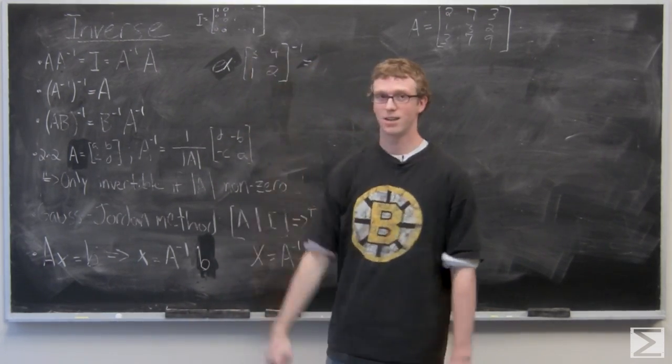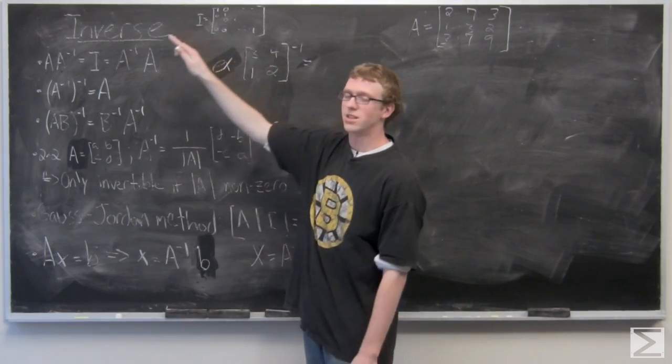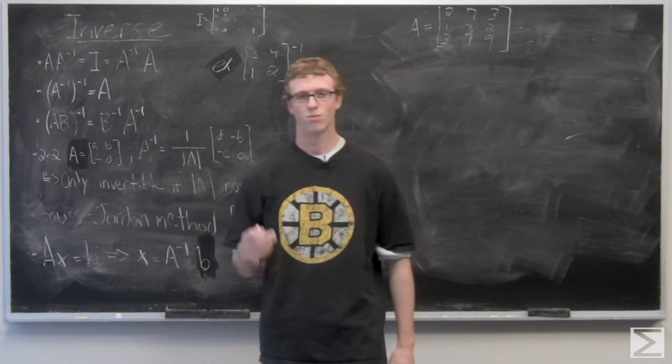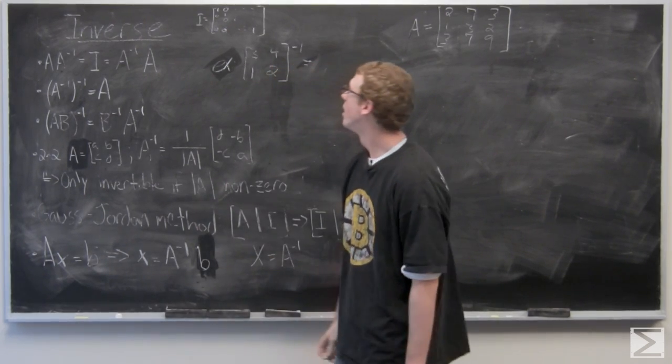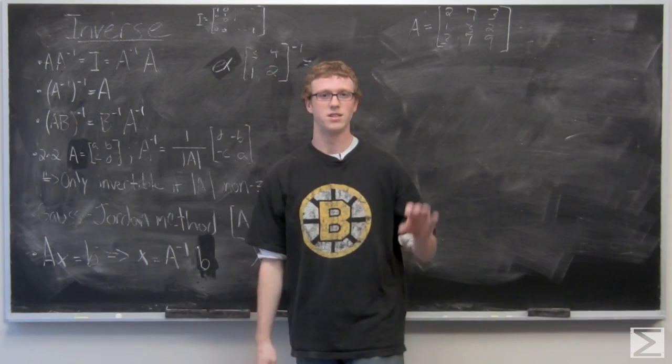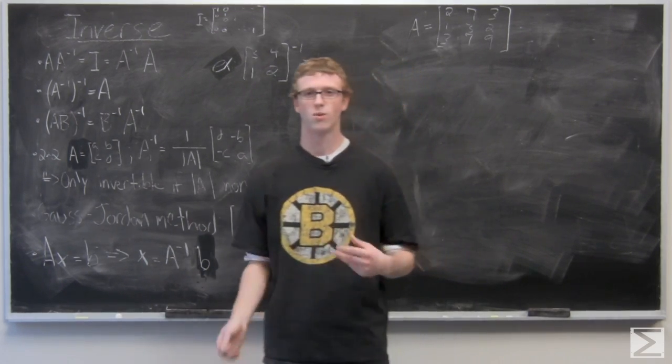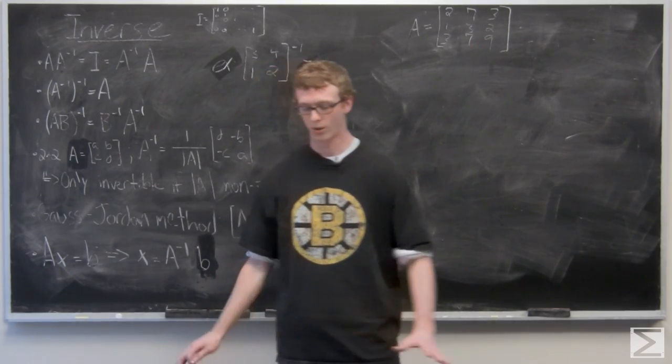I is the identity matrix. What I looks like depends on the size. If it's a 2 by 2 it looks like 1, 0, 0, 1. A 3 by 3 has ones on the main diagonal and then six zeros above and below. You can get the picture—it's all ones on the main diagonal and zeros everywhere else.